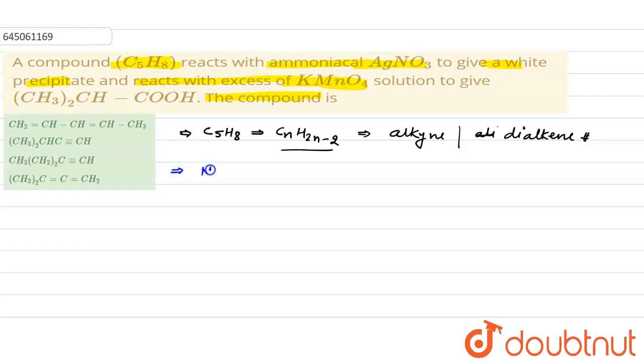ammoniacal silver nitrate, means the mixture of NH4OH plus silver nitrate, gives white precipitate with terminal alkyne.